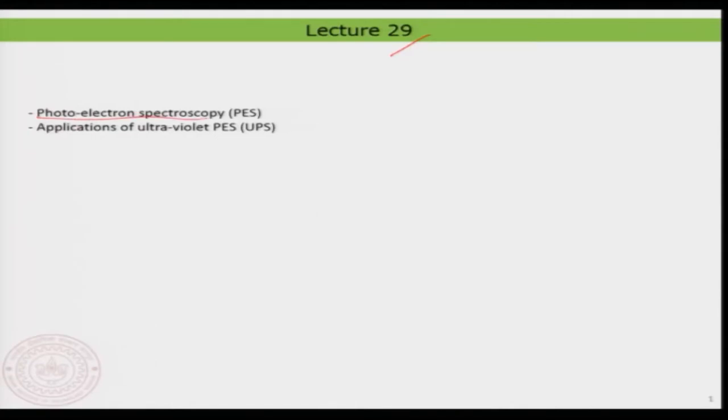Hello everyone, welcome back to lecture 29. In this lecture, we will be looking at a new technique mainly to understand the electronic structure of the surface. So far what we have been looking at was the scanning tunneling microscopy and scanning tunneling spectroscopy. In this technique, we will be familiarizing something called photoelectron spectroscopy and we will also see their application. This is a technique mainly used for understanding the electronic properties of material.